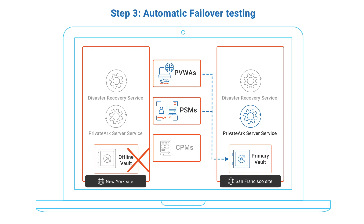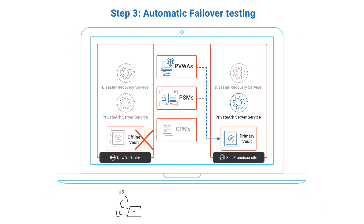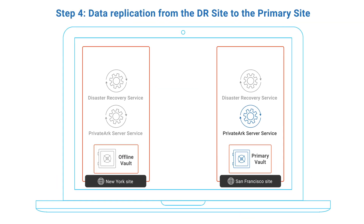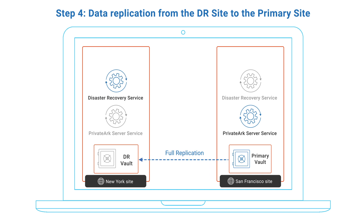For the failover test to be considered a success, we need to ensure that our end users can still access critical systems via CyberArk without any human intervention. In the fourth step, after ensuring that the automatic failover test from New York to San Francisco has been successfully completed, we will set the vault in New York to act as DR and replicate all data from the San Francisco site back to the New York site. Effectively, New York now becomes the DR site with San Francisco acting as the primary site.